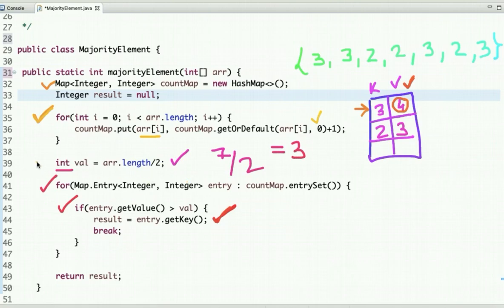Once we created the map, we need to check the value—what's the length of the array divided by 2. If any number appears more than this value, then it's a majority element. Using this approach we can solve this problem in O(n) time complexity. The space complexity of this approach is also O(n).